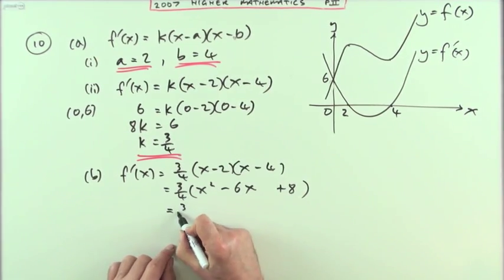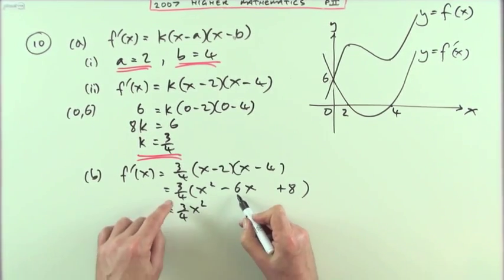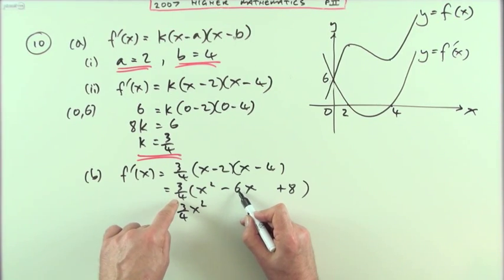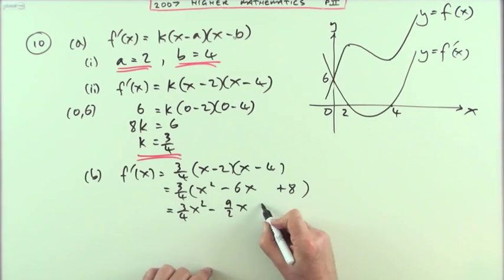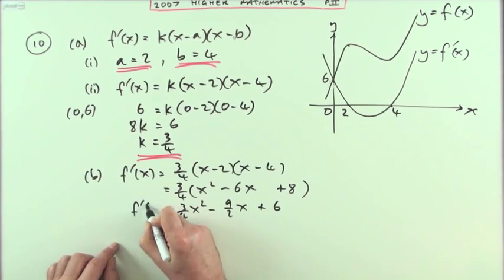But I'll need separate terms. So that's three quarters of x squared. Four and six that cancels down to two and three. So that's minus nine upon two x. Four and two eight equals two. Three twos are six. That's f'(x).